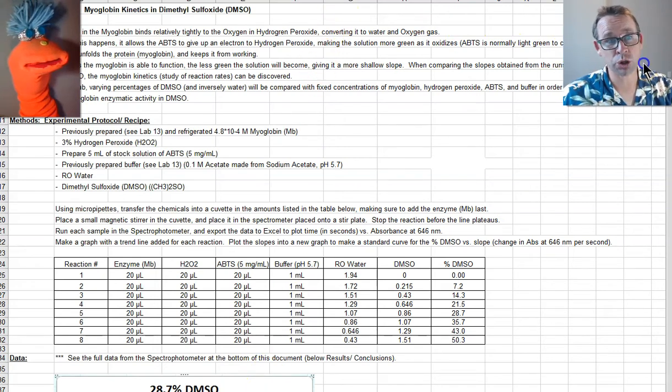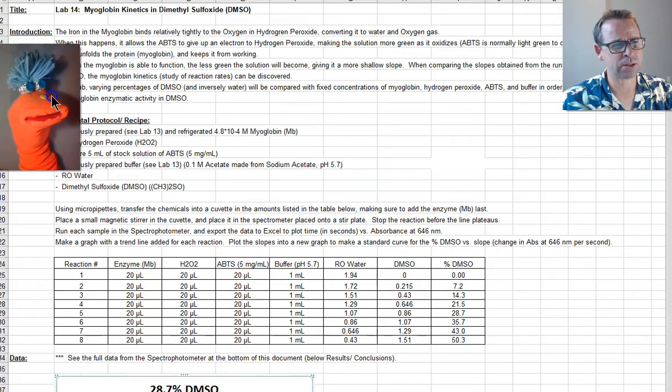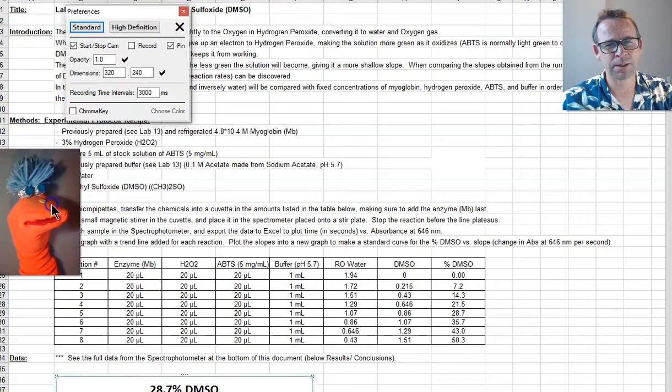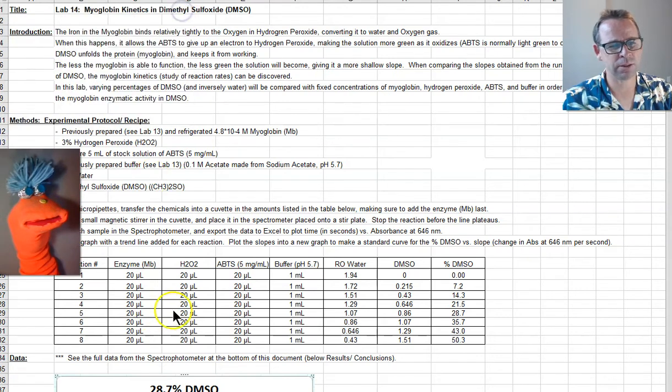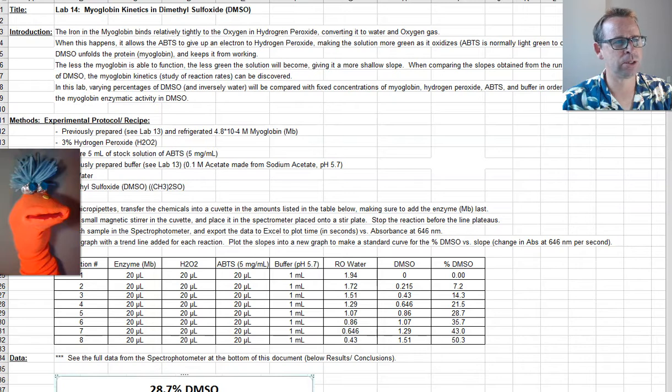This video is going to show us how to make a lab report in an Excel document. We choose to make a lab report in Excel simply because the data, the values, and the tables are the most important component that we want to preserve for later on. Writing things like the title, the introduction, and the method is not as convenient in Excel.